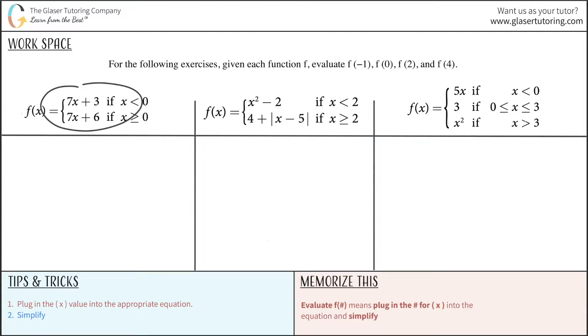Let's take a look at the first one here. We need to evaluate f of negative 1. Now basically what this means is that we're going to take negative 1 and plug it into our equation, but we realize we have two equations. So what you have to do is you have to see where your x value lies in these constraints.